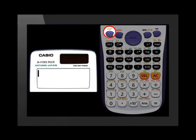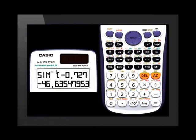Now we need to use our calculator. First, we push shift, then the sine button, and then negative 0.727, and equals, and we get negative 46.63547953. Now let's put this into the general solution of sine.